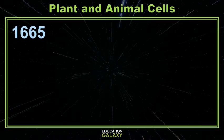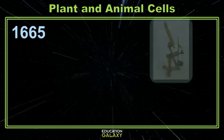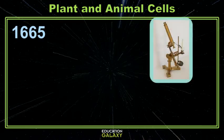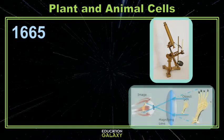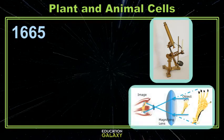The year is 1665, and microscopes are still a relatively new invention. People are pretty much slicing up anything they can to look at it closely underneath these first primitive microscopes. Microscopes work by using a curved piece of glass or lens to make tiny things large enough for you to see.